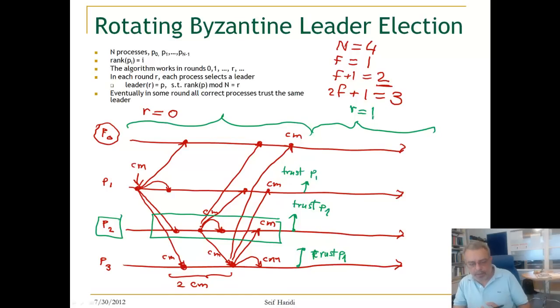Eventually, one correct process will be elected as a leader and the system will remain so because it is a partially synchronous system. With this, we have finished discussing failure detectors and different kinds of leader election algorithms for different models. Now we will start to look at services in a distributed system — abstractions for different kinds of broadcasts, followed by abstractions for building shared memory or shared stores, and after that the consensus problem.